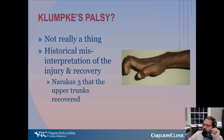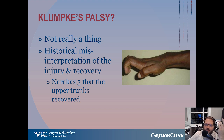Briefly talking about Klumpke's palsy, because you'll see this on Orthobullets and other places: this isn't really a thing for obstetrical brachial plexus palsies. It can exist in adults with certain mechanisms but hasn't really been described in infants other than in one to two case reports. It's thought to be a historical misinterpretation of the injury, which is usually a Neuracus 3 where the upper trunks resolved but the lower didn't — which is why they have a persistent ulnar claw hand. The original injury is probably actually a total plexus palsy with partial recovery.